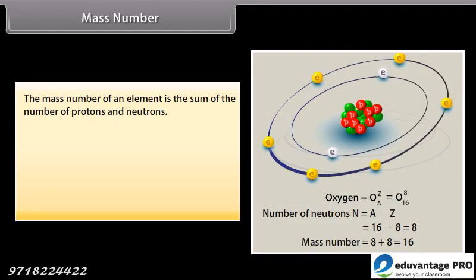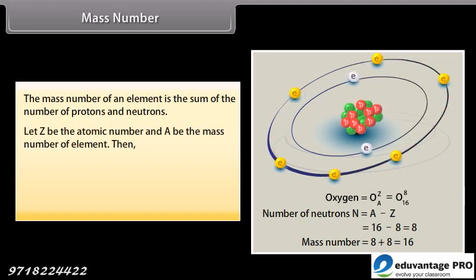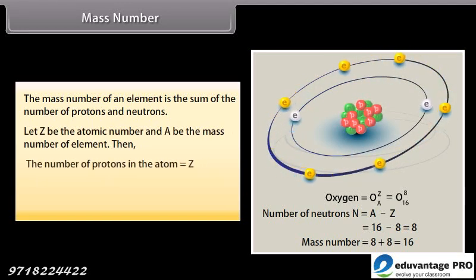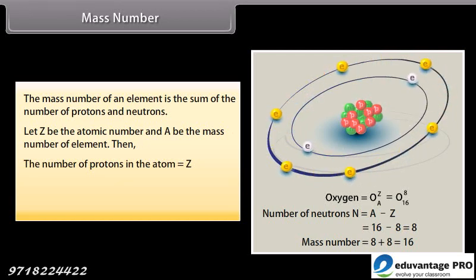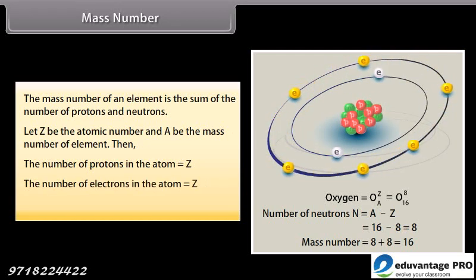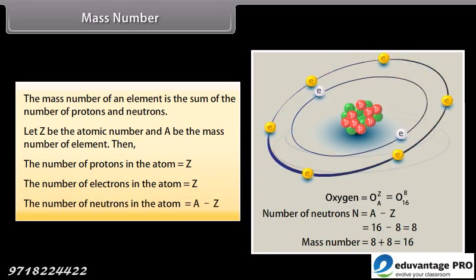Mass number. The mass number of an element is the sum of the number of protons and neutrons. Let Z be the atomic number and A be the mass number of element. Then, the number of protons in the atom is equal to Z. The number of electrons in the atom is equal to Z. The number of neutrons in the atom is equal to A minus Z.